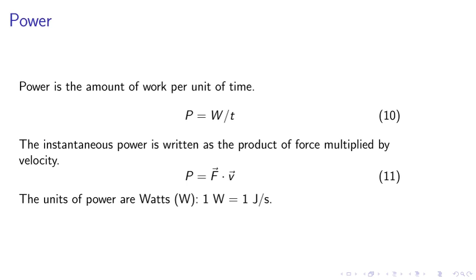Power. Power is the amount of work per unit of time. P equals W over T. The instantaneous power is written as the product of force multiplied by velocity. We consider the dot product as P equals F dot V. The units of power are watts. One watt equals one joule per second.